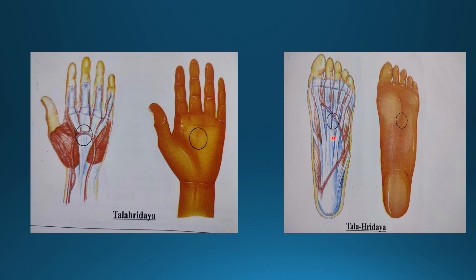The plantar aponeurosis has three parts: medial, lateral, and central. In the palm also the same thing — this is palmar aponeurosis. The base is towards the fingers and the apex is at the wrist. It is also a deep thick connective tissue which protects the underlying structures of the palm. There is also the superficial and deep palmar arch, and the plantar arch is also present, along with the flexor group of muscles and tendons.